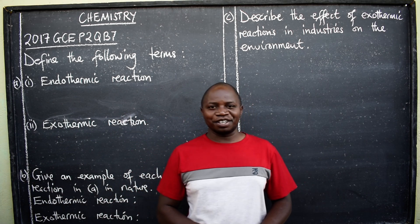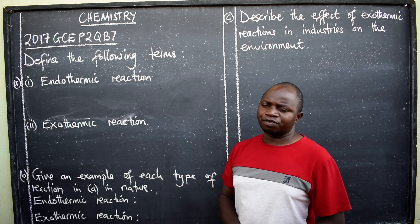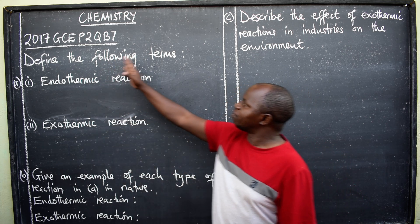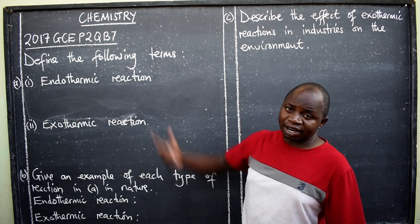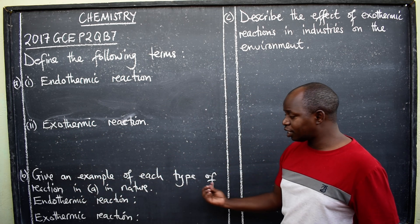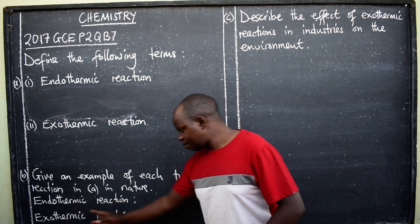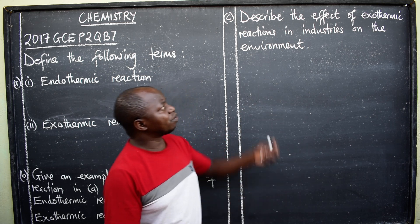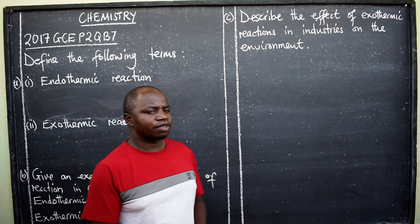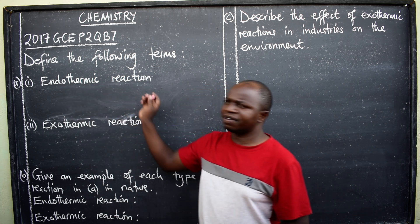Greetings ladies and gentlemen, this is chemistry. In this lesson let's discuss this question from the 2017 GCE paper 2, question B7. Define the following terms: endothermic reaction and exothermic reaction. Part B says give an example of each type of reaction in nature — one endothermic, one exothermic. Then describe the effect of exothermic reactions in industries on the environment.